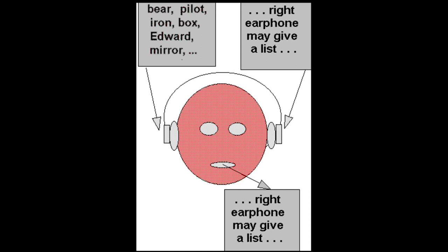In a shadowing task, the participant is wearing an earphone and is told to attend one auditory signal while ignoring a second auditory signal.